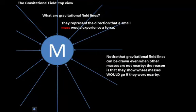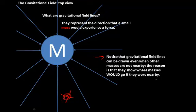Notice that these gravitational field lines could still be drawn even if we don't show the smaller mass. Even if we don't have a mass out here, we can still draw the gravitational field lines. The gravitational field lines can be drawn even when other masses are not nearby, because they show where the masses would go if they were nearby.